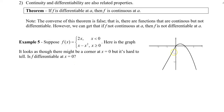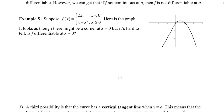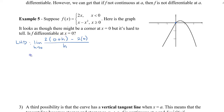I've drawn the graph already. It looks as though something is happening at x equals 0, which we call a corner. We'll use the left-hand and right-hand derivatives to test this. For the left-hand derivative, the limit as h approaches 0 of 2(0 plus h) minus 2(0), all divided by h. This simplifies to the limit of 2h over h, which gives a left-hand derivative of 2.